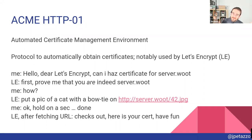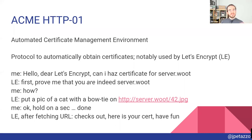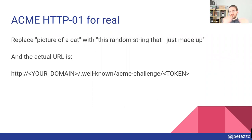The way ACME HTTP-01 works: I ask Let's Encrypt for a certificate for server.woot. Let's Encrypt says 'first, prove you really are server.woot.' I ask how, and Let's Encrypt says 'put a picture of a cat with a purple bow tie on http://server.woot/42.jpg.' I prove I am server.woot by doing what they ask — I put the cat picture there. Let's Encrypt fetches that URL, checks that it's correct, and says 'all right, it's you — I'll give you a certificate.' It works exactly like that, except instead of a cat picture it's a random string you put in a specific place.